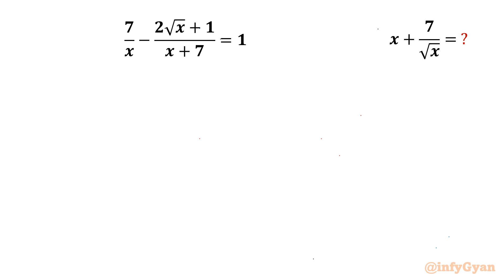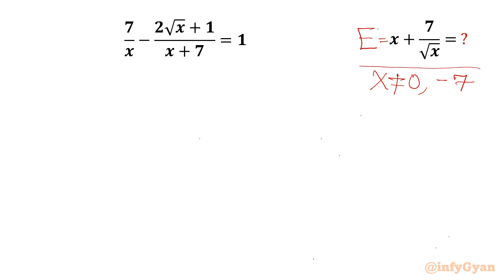Let's get started by considering our expression equal to e. We note that x cannot be 0 and x cannot be negative 7, since denominators cannot be 0. Also, since root x is present, x should be greater than 0.